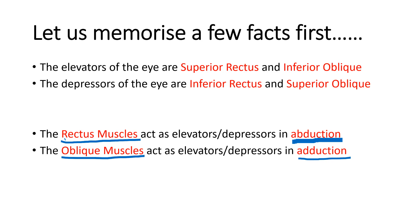So what does this mean? This means that when the eye is in a position of abduction, the elevation is done by the superior rectus and the depression is done by the inferior rectus. But when the eye is in a position of adduction, the elevation is done by the inferior oblique. Keeping this in mind, what we are going to do is we are going to draw a grid, in which we will try to represent the muscles according to the position in which they act.